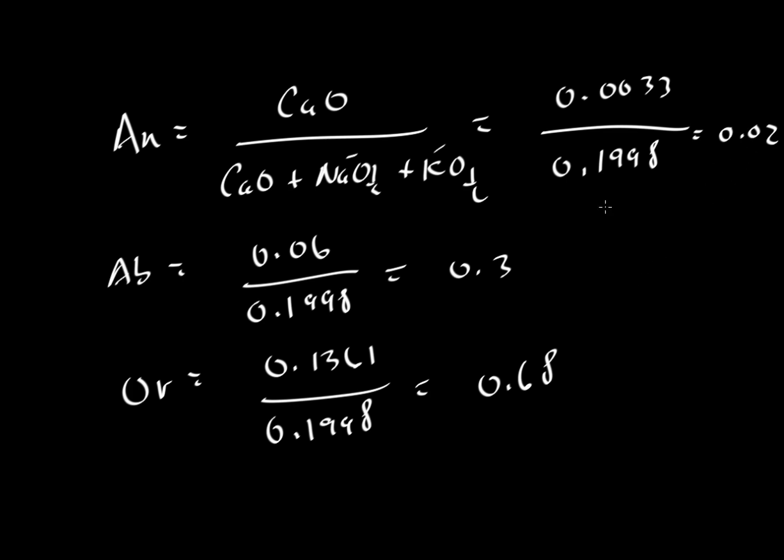So we have something that is 2% anorthite, about 30% albite, and 68% orthoclase. All those things should sum to one. Let's erase the chalkboard again and look at how we would write that.